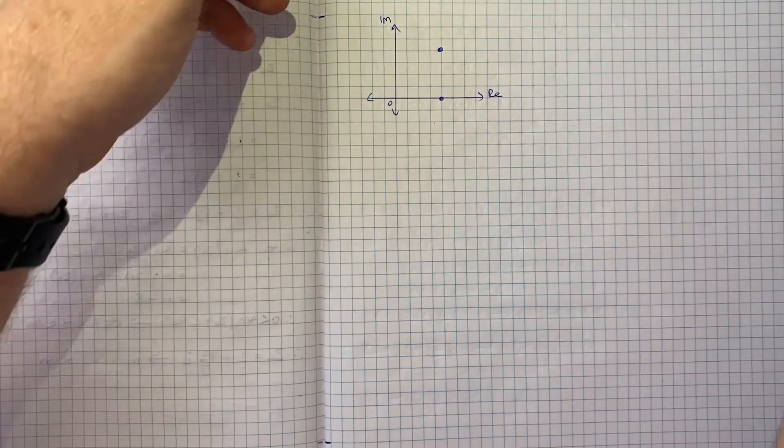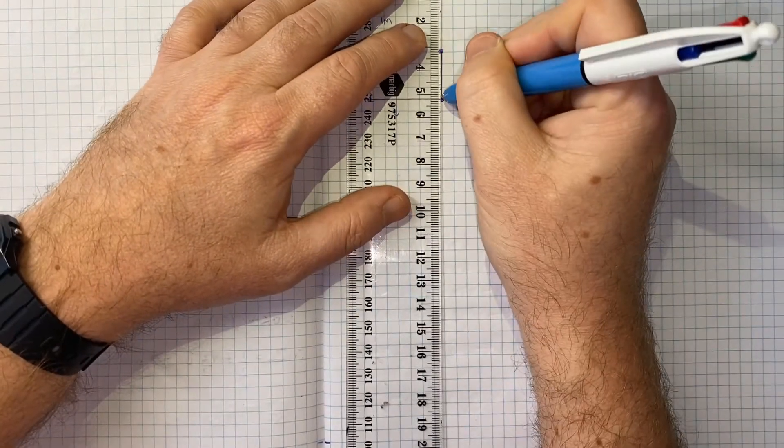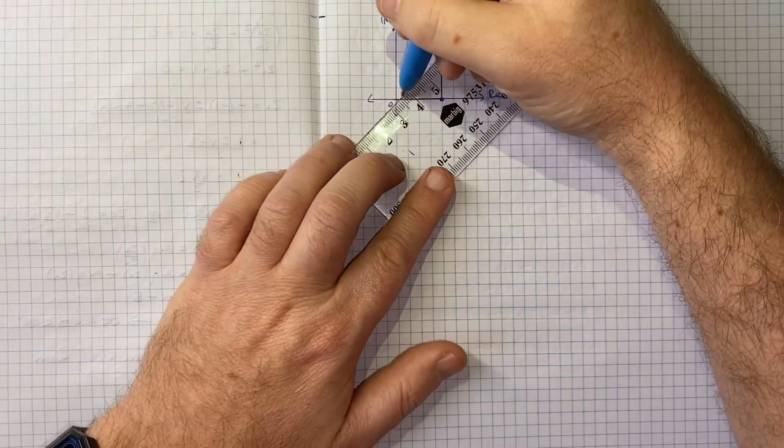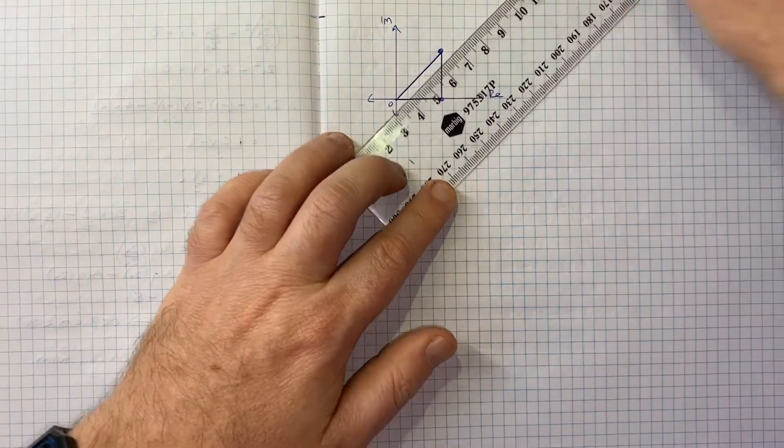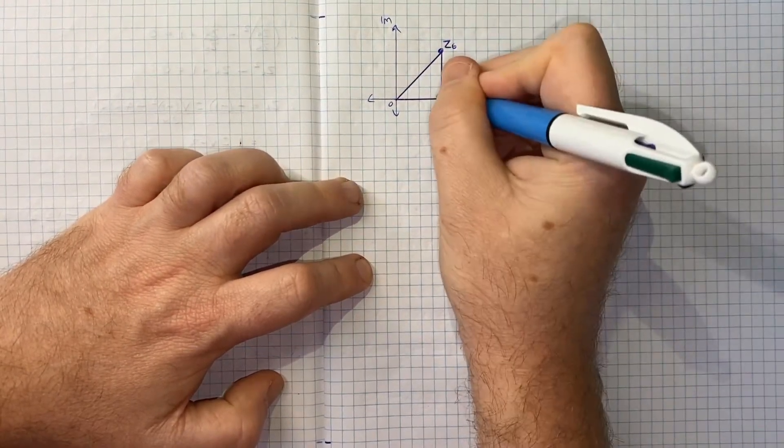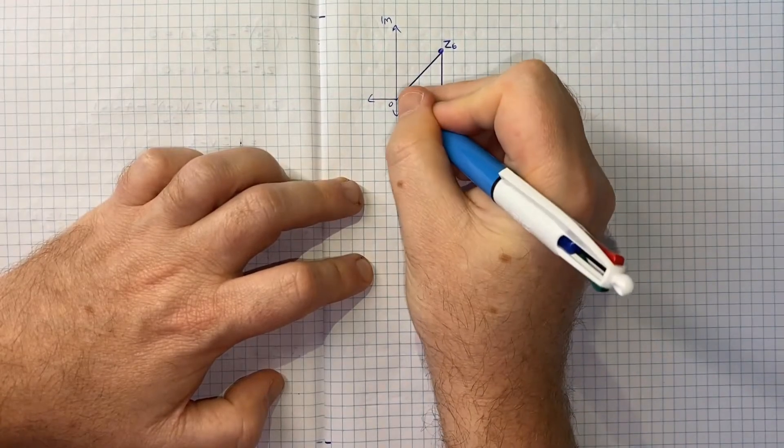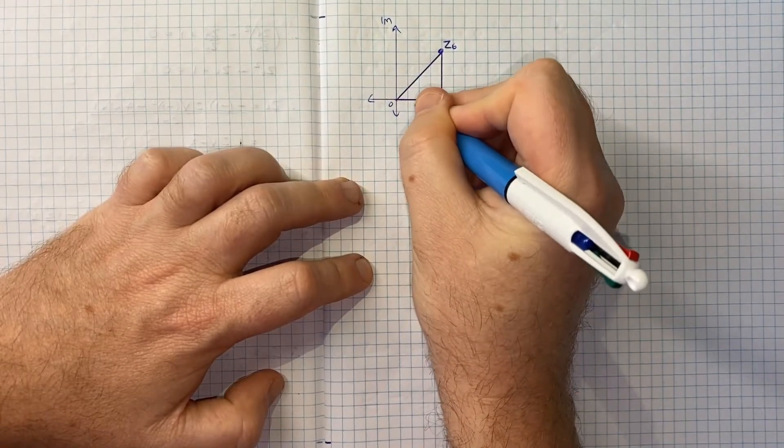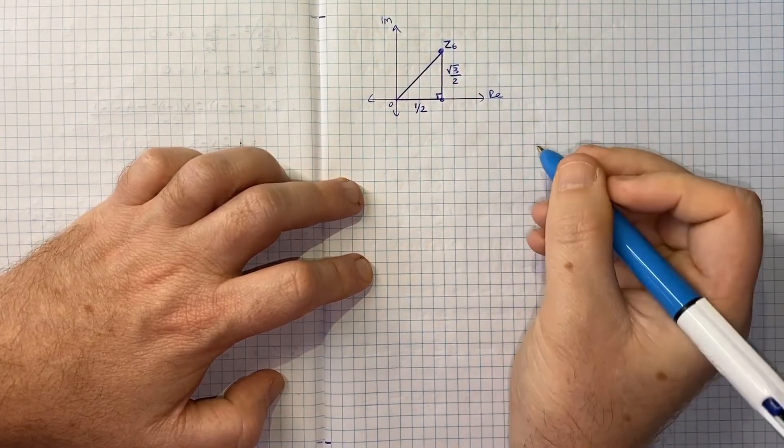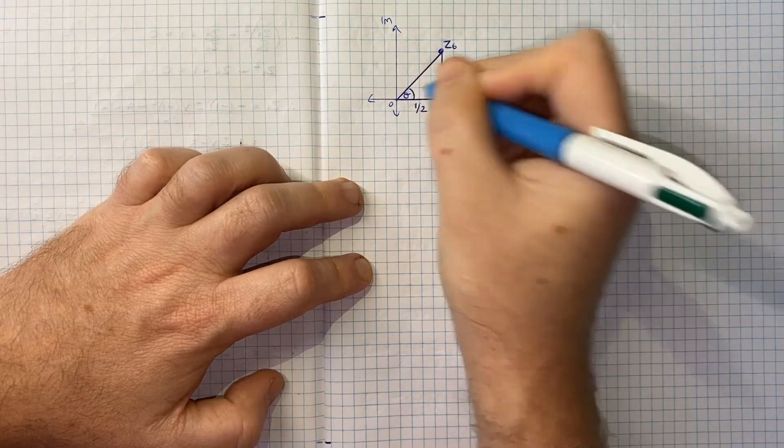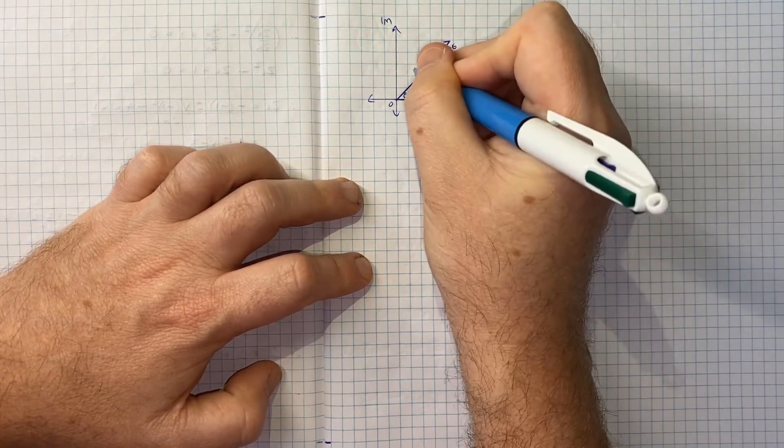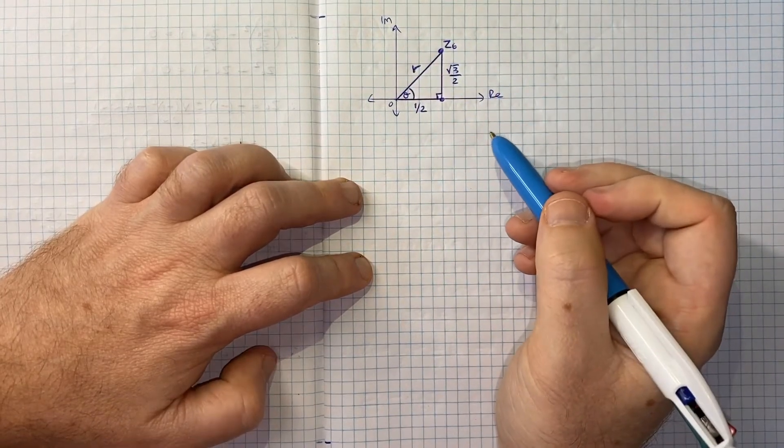If you think of our Z6 now, we move across a half, and I'm not going to draw this to scale, but basically we move across a half and we move up root 3 over 2. If I connect these as a triangle, what we'd end up with, if this is our point Z6 in the Argand plane, we'd have a right-angled triangle with this base being a length of a half and this height being a length of root 3 over 2. This angle here would be theta in terms of our mod arg form, and this length here would be r.